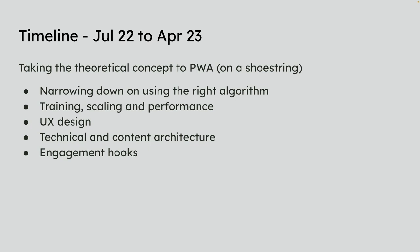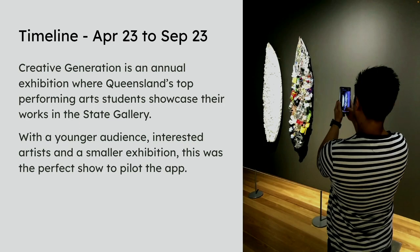That was just an internship project with a PhD student. When it finished in July 2022, we gave ourselves a deadline of April 2023 to build a progressive web app on a shoestring — narrowing down to the right algorithm, how to train the process, how to scale it, the UX design, the technical architecture, and what makes it engaging. We were aiming for that date because in April 2023 we launched Creative Generation, where we invite the top Year 12 students in Queensland to display their artworks. It's a younger audience, only 32 of them — so we could have a one-to-one relationship, ask them questions they wanted to put in, so when visitors scanned the work, the artist could talk back to the public. The showcase night went really well.